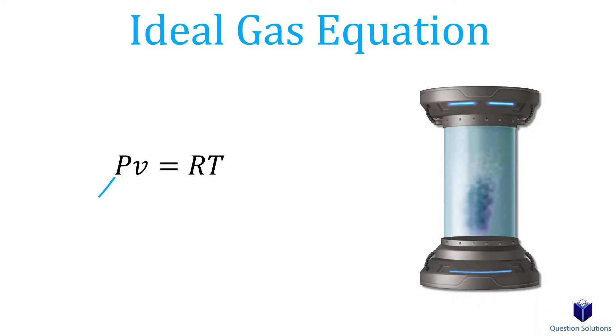Here, P is absolute pressure, T is absolute temperature, and this is the specific volume. To use this equation, the temperature must be in Kelvin, not Celsius or Fahrenheit.